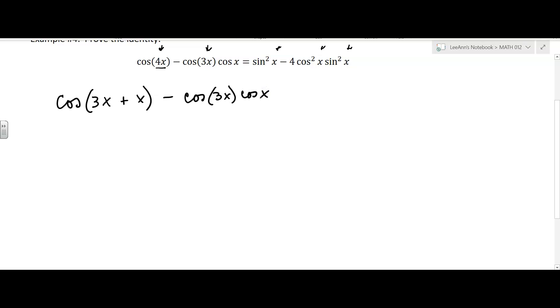Now, my thought in doing that was, well, then at least I have the arguments the same as the other piece, so I'm just splitting up the 4x. Now, I can use my sum formula for cosine, which says cosine alpha cosine beta minus sine alpha sine beta, and then I still have minus cosine 3x cosine x. That's this part here.